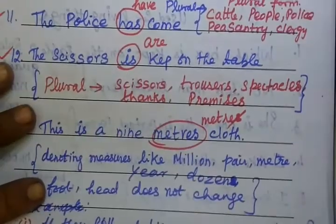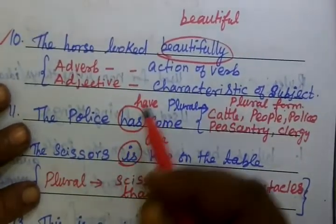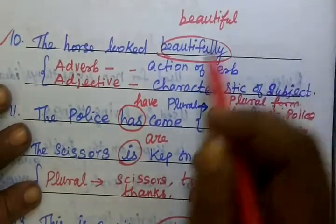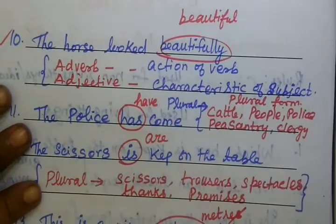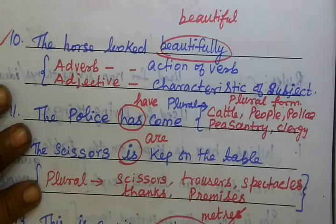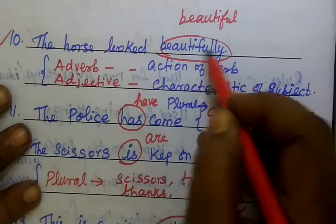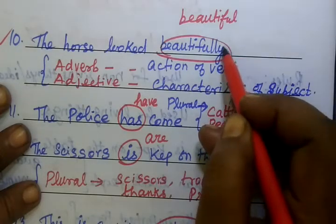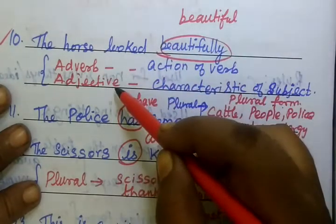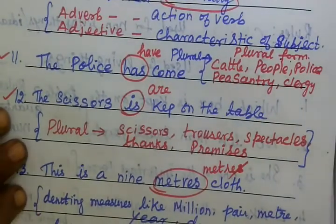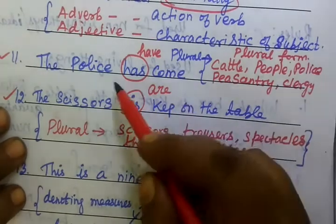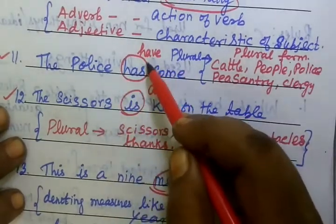The 10th one: the horse looked beautifully. Not 'beautifully' — it should be 'beautiful'. The adjective describes the characteristic of the subject. So the correct sentence is: the horse looked beautiful.